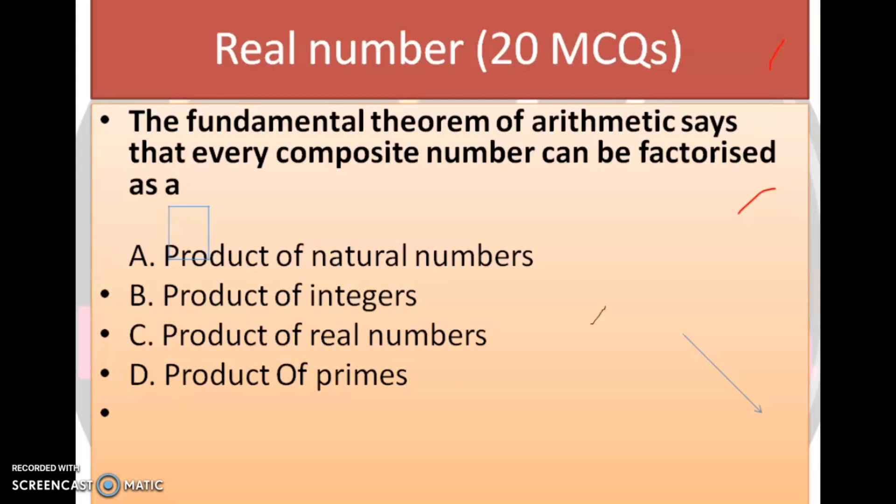Question number 1. The fundamental theorem of arithmetic says that every composite number can be factorized as a product of natural numbers, product of integers, product of real numbers, product of primes. The correct answer is product of primes.